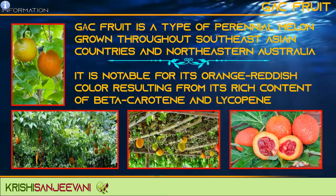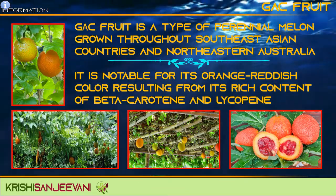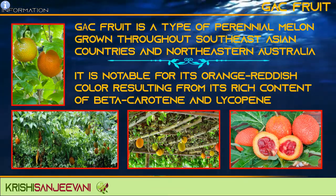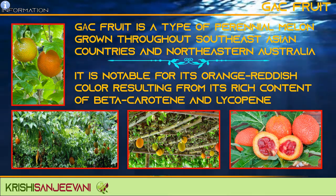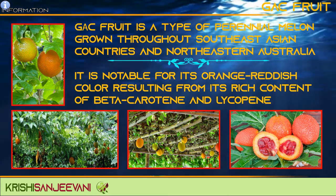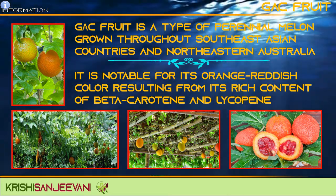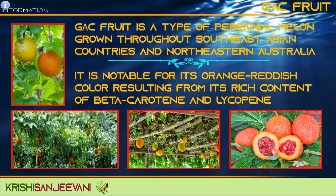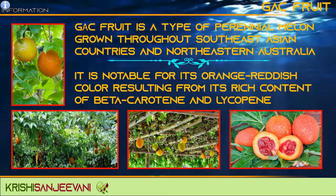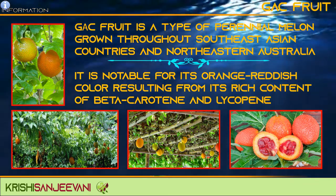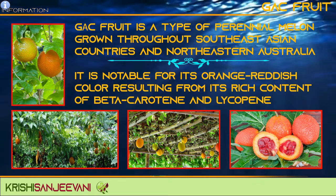Gac fruit is a type of perennial melon grown throughout Southeast Asian countries and Northeastern Australia. It is notable for its orange-reddish color resulting from its rich content of beta-carotene and lycopene.